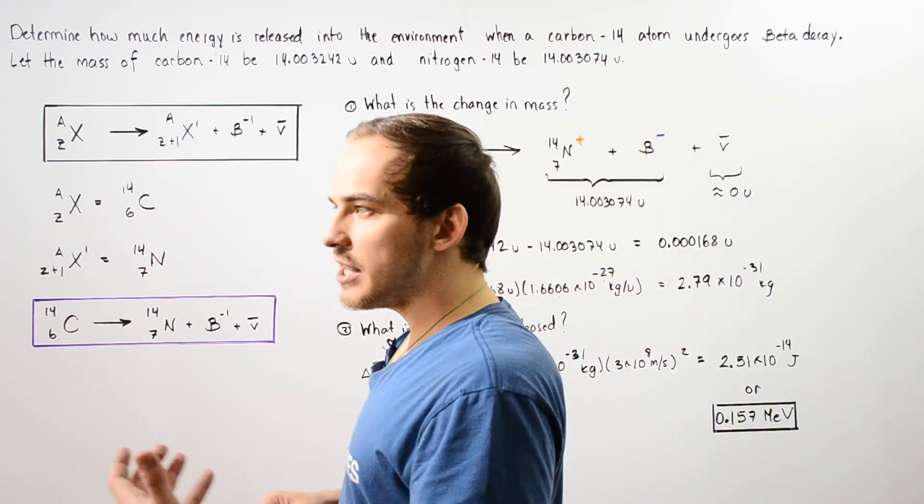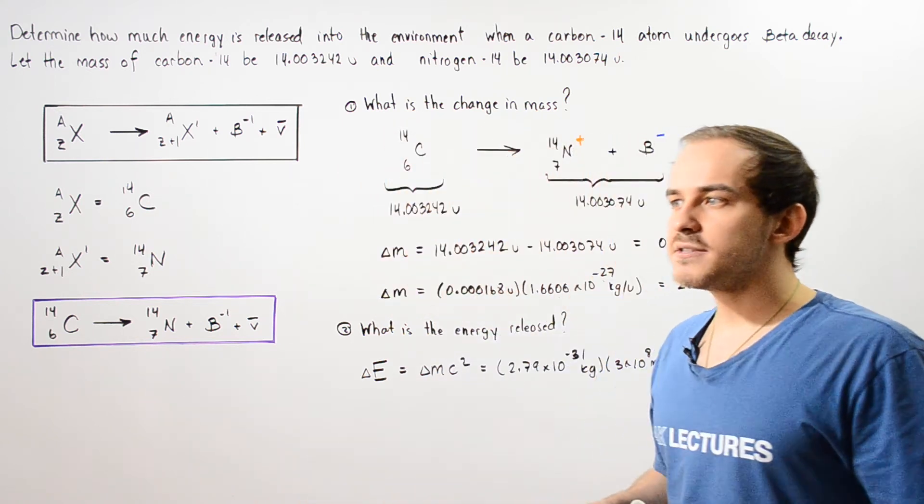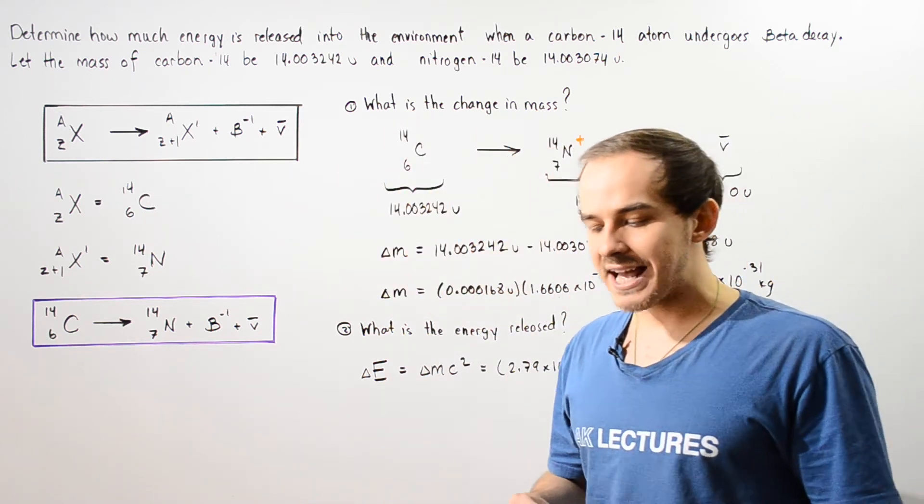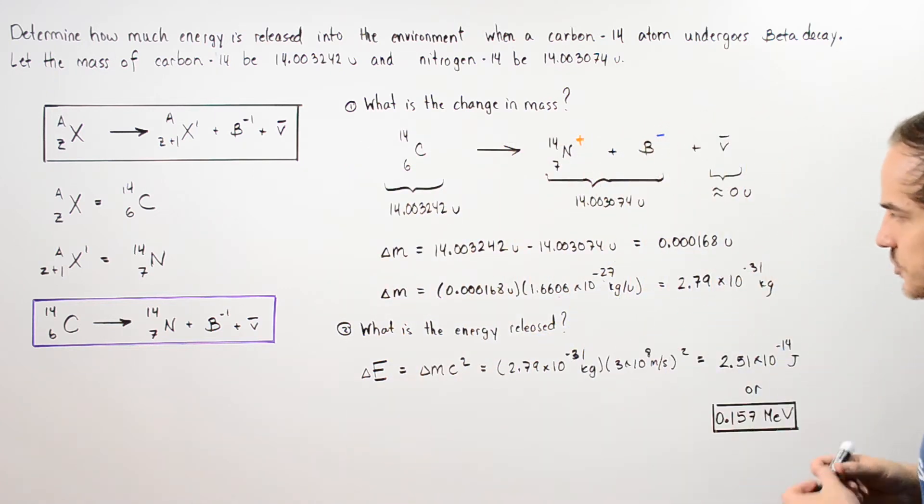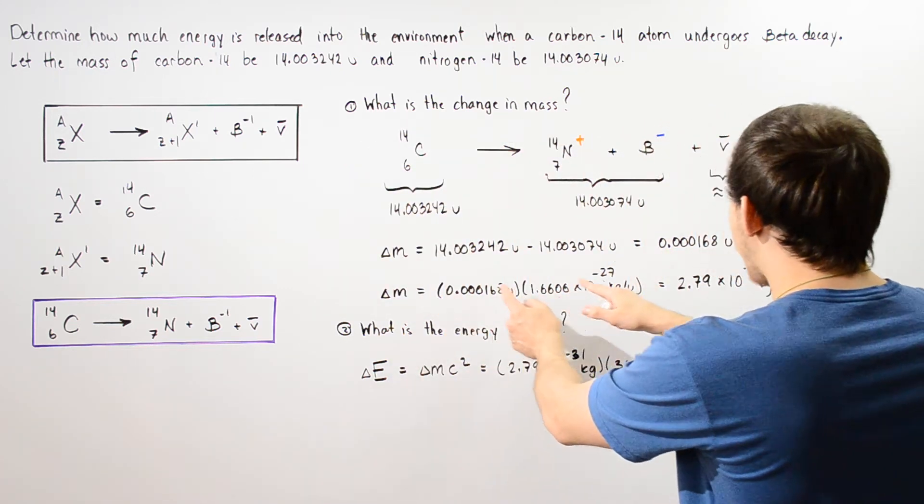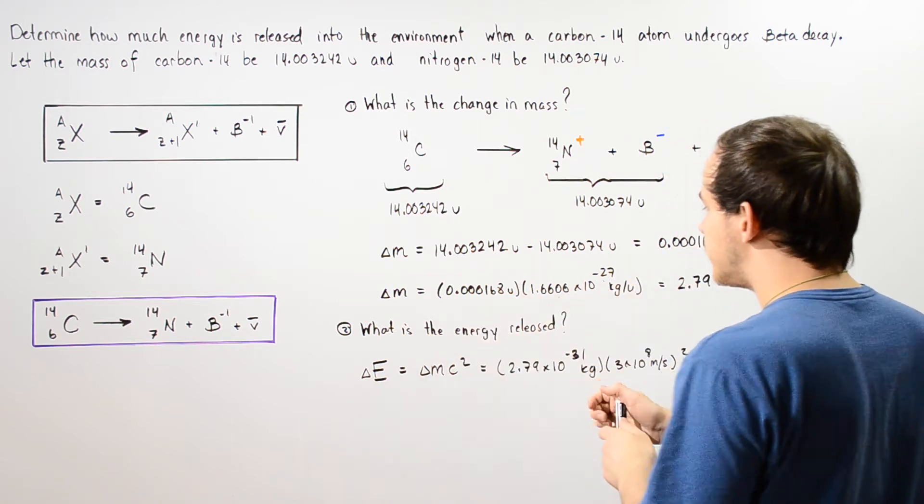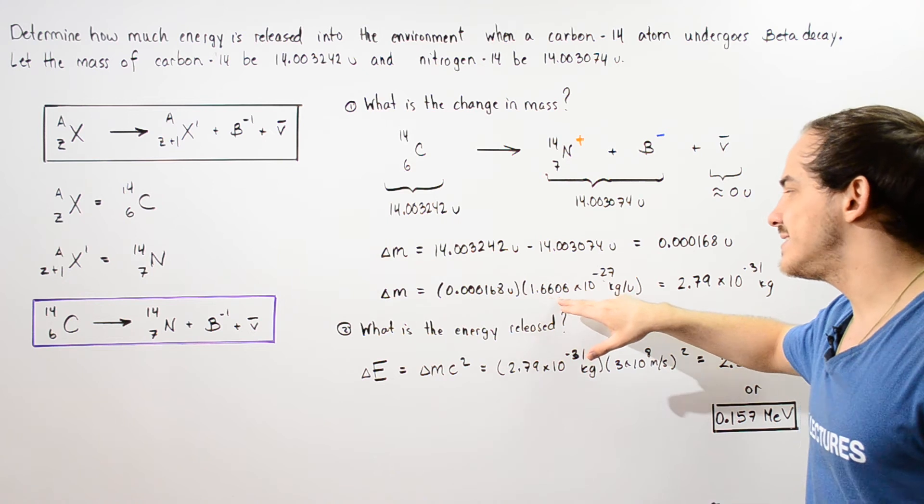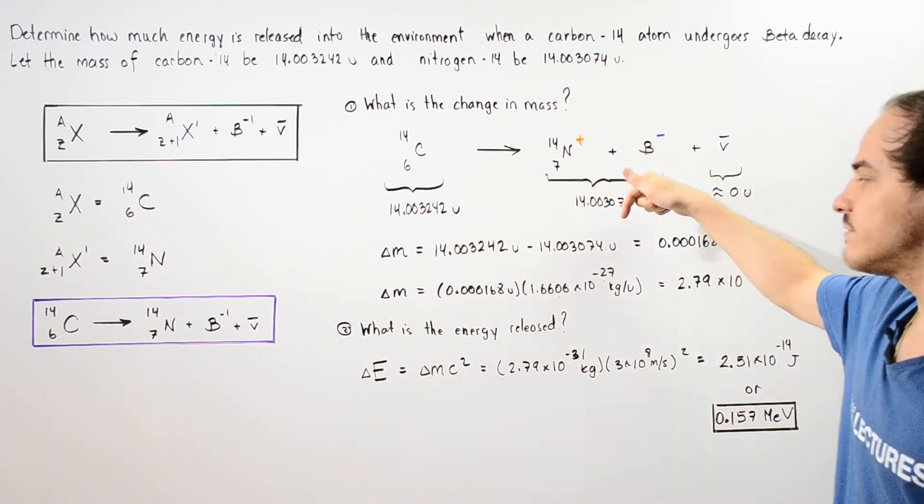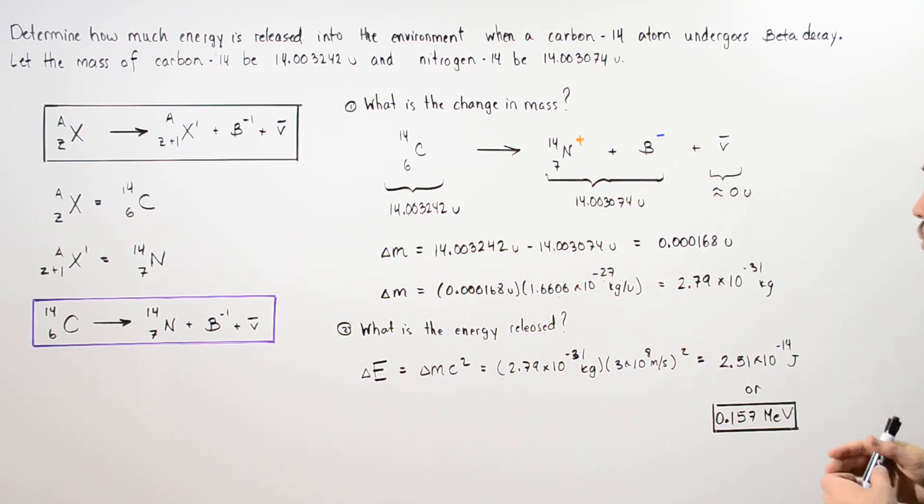Now to actually use this in our rest mass equation to calculate the energy change or the energy released we have to convert into kilograms. So we multiply this amount in unified atomic mass units by the conversion factor of 1.6606 times 10 to negative 29 kilograms per U. The U's cancel and we're left with about 2.79 times 10 to negative 31 kilograms.